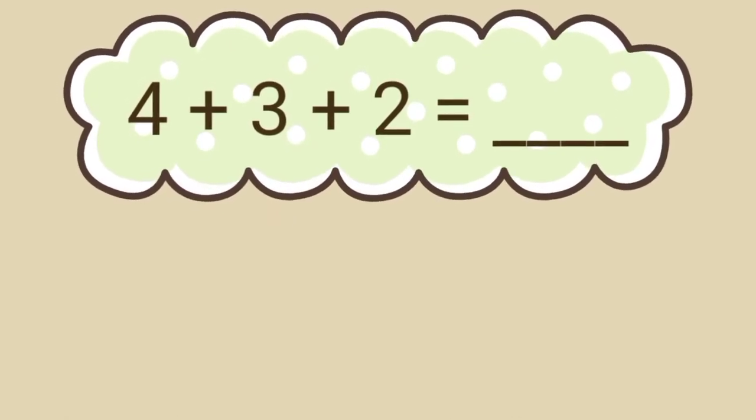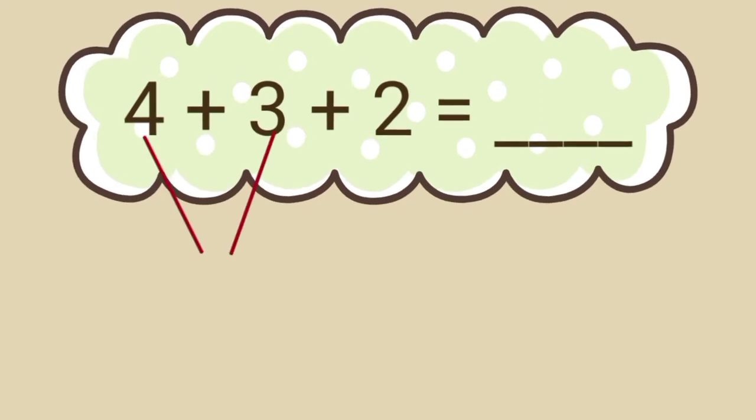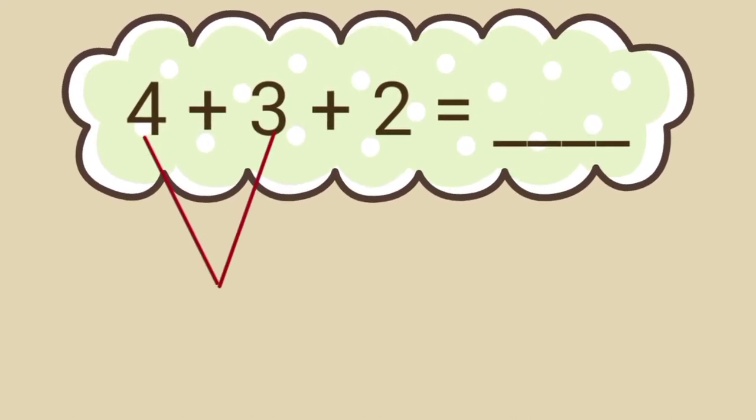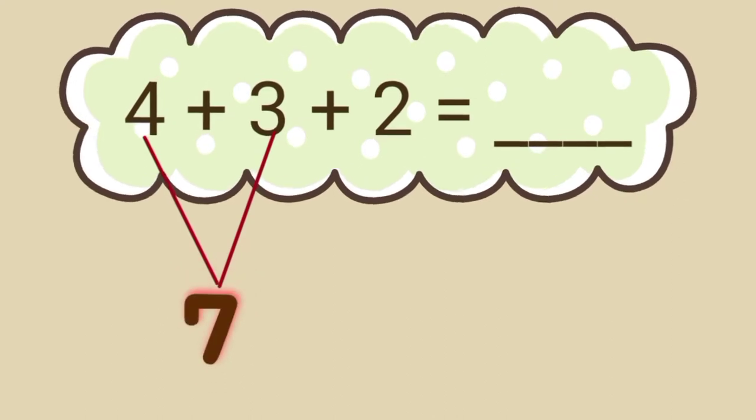Take a look at this sample. How do we find the sum of 4 plus 3 plus 2? First, we have to add 4 and 3. 4 plus 3 equals 7.